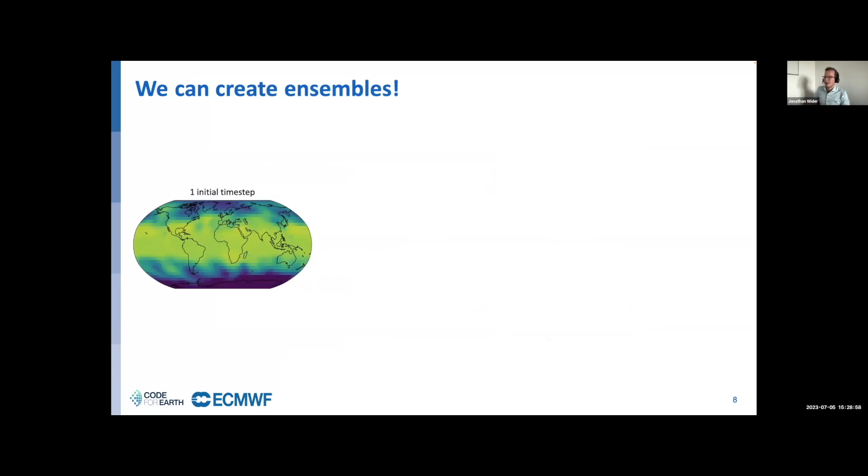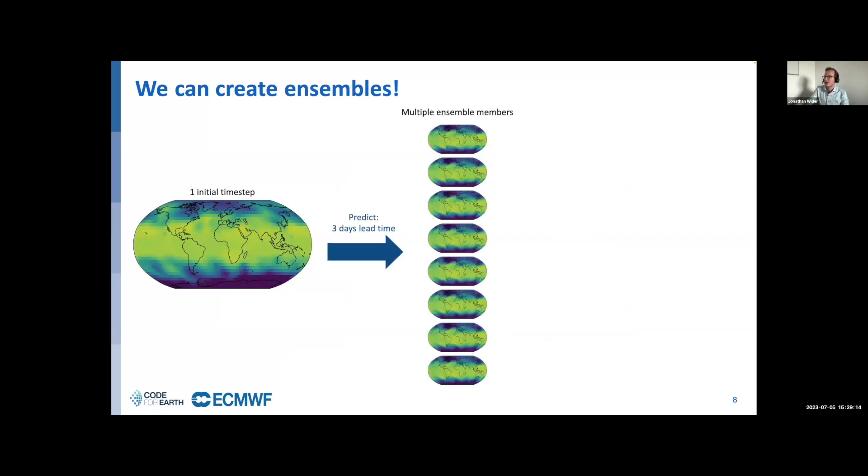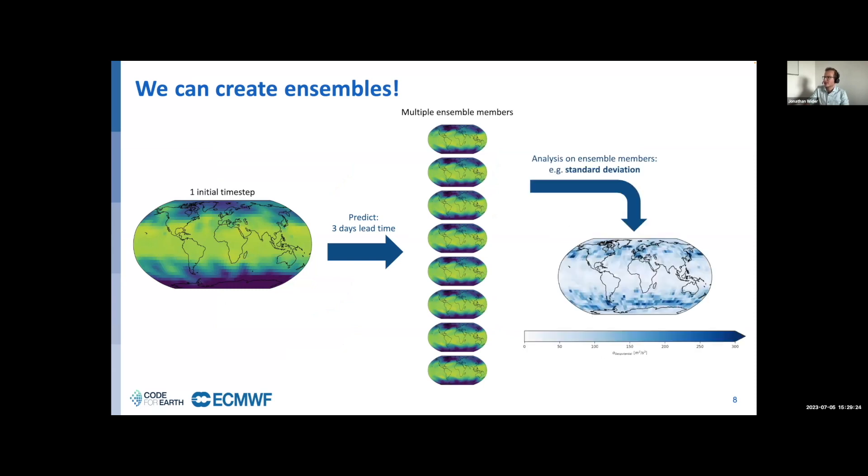One nice thing about diffusion models is that we can produce ensembles. In the example I used to illustrate the approach, I put in one sentence and got back four images. We can do the same thing: put in one weather state and get out a whole bunch of ensemble members. Ideally, we can do some analysis on this. We haven't done this in detail, but for illustration purposes, I show the standard deviation of the ensemble here. We can see that the standard deviation is highest in the regions where the network is not really sure and the deviations between predictions and ground truth are largest.